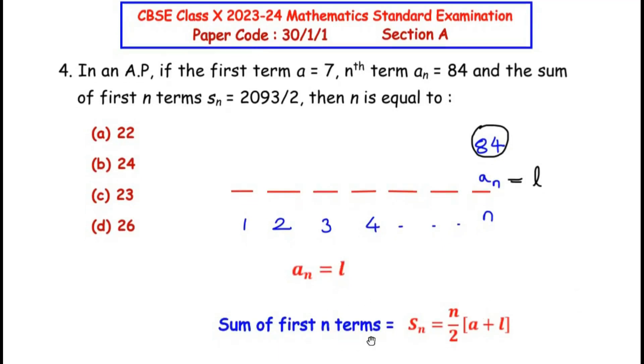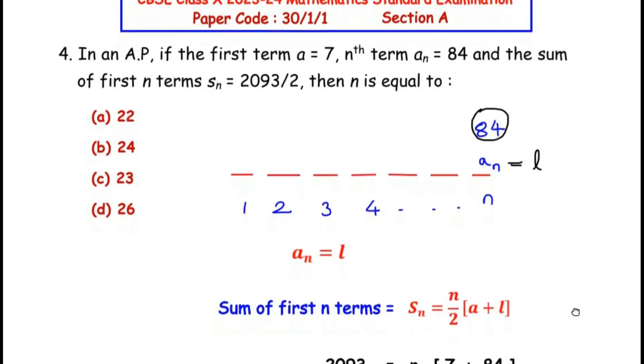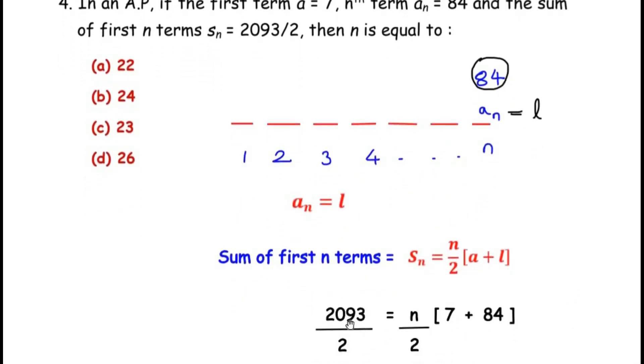Since an now acts as the last term l, we have sum of first n terms given by the formula Sn equals n/2 times (a plus l), where n is the number of terms we need to find. The value of Sn, a, and l are given, so we substitute their respective values: Sn equals 2093/2 equals n/2, and the first term a is 7 plus the last term 84.